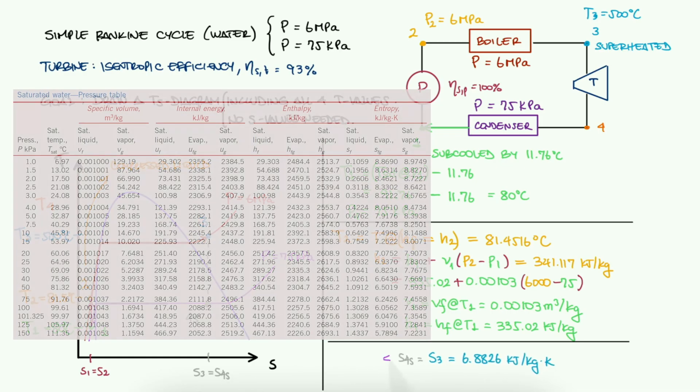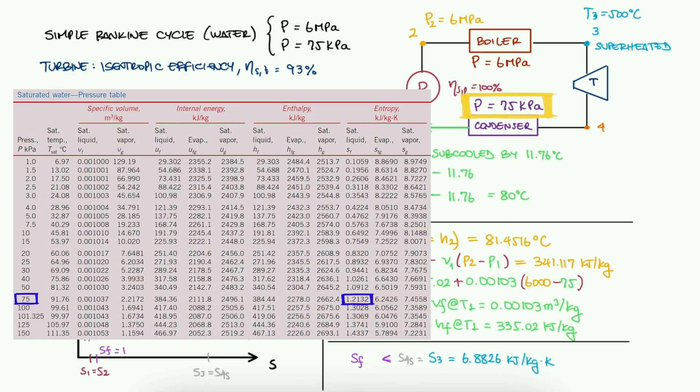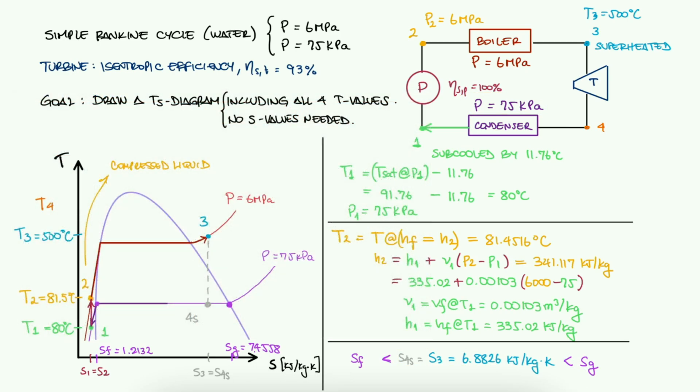For this problem, all we need to see is that at P4, SF is lower than S4S, lower than SG. And this means that state 4S is a saturated mixture.